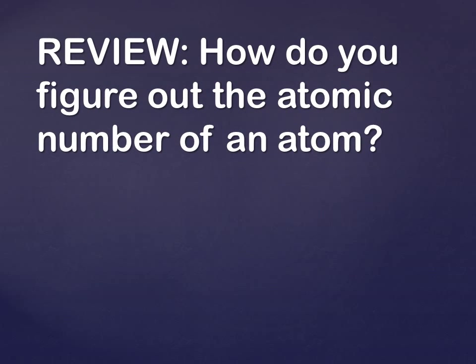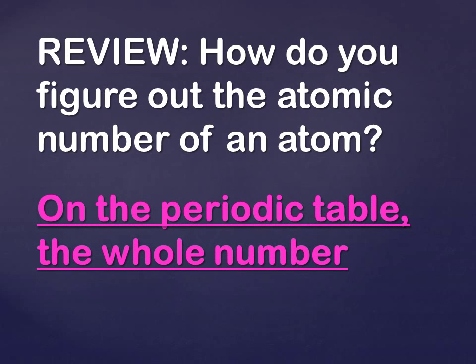So we need to review a few things first. The first thing would be how do you figure out the atomic number of an atom. You need to know where to look — we need to look at the periodic table. Remember when you look at the periodic table, there are going to be two numbers. You need to look at the whole number; it's also the number that the periodic table is organized by, like one, two, three, four.